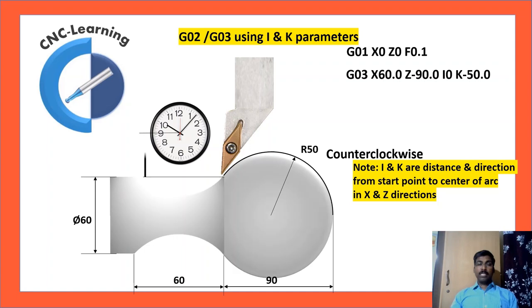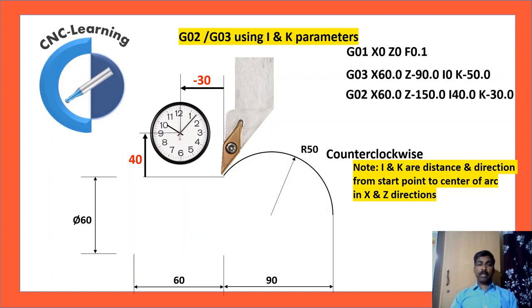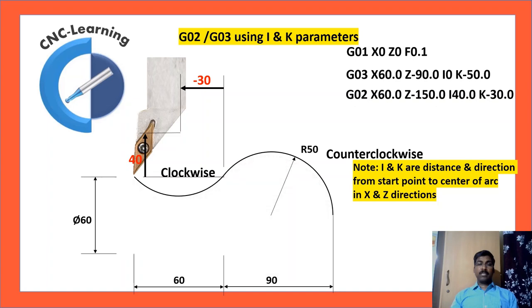Next is in I direction, that means in X direction, it is 40, so I will be 40. And Z-axis direction, it is 30 towards left, so minus 30, so K minus 30. G02 because the direction is clockwise, X60, Z minus 150, I40, K minus 30.